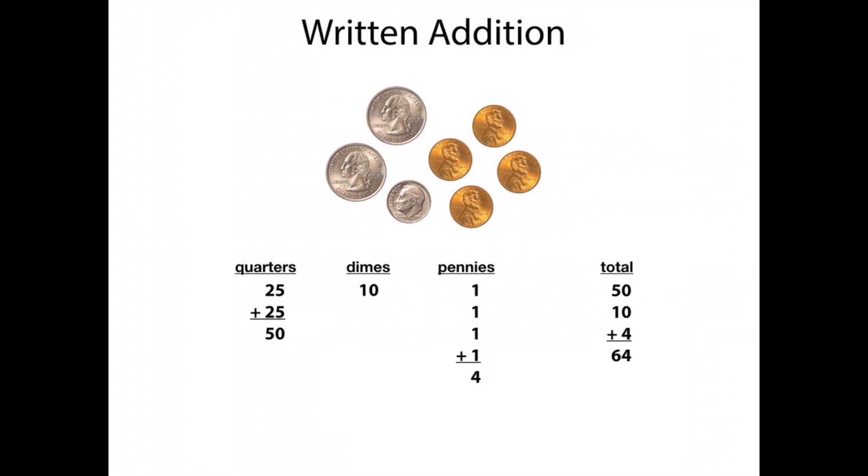Another way is doing written addition, in which I group them by whatever type of coin they are. So putting my quarters together, 2 quarters equals 50 cents, 1 dime of 10 cents, 4 pennies being 4 cents, and then I add up all of those partial sums. So 50 plus 10 plus 4 equals 64. So written addition.